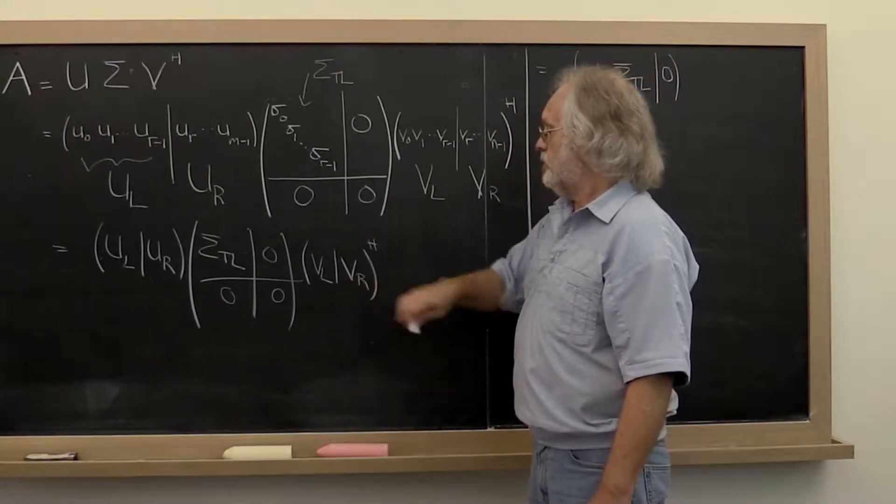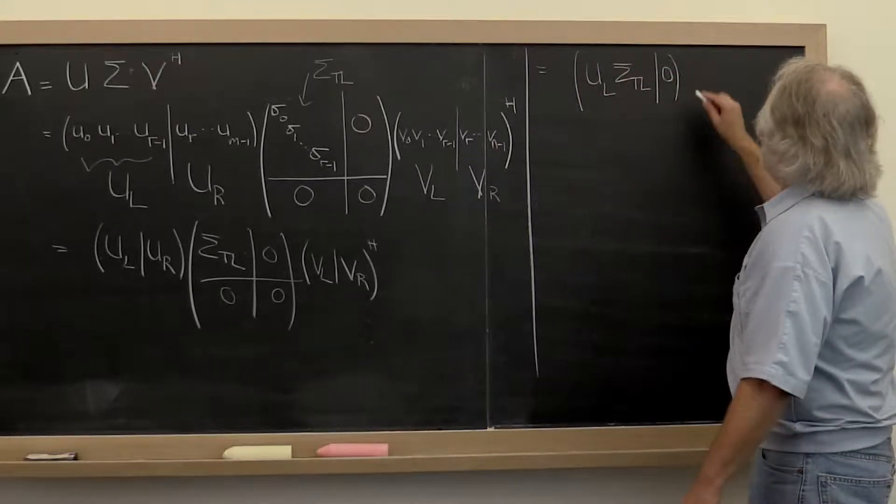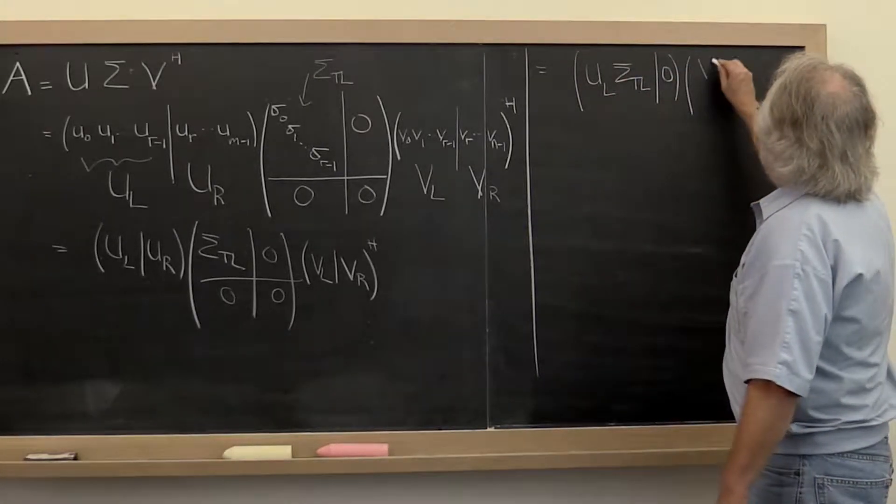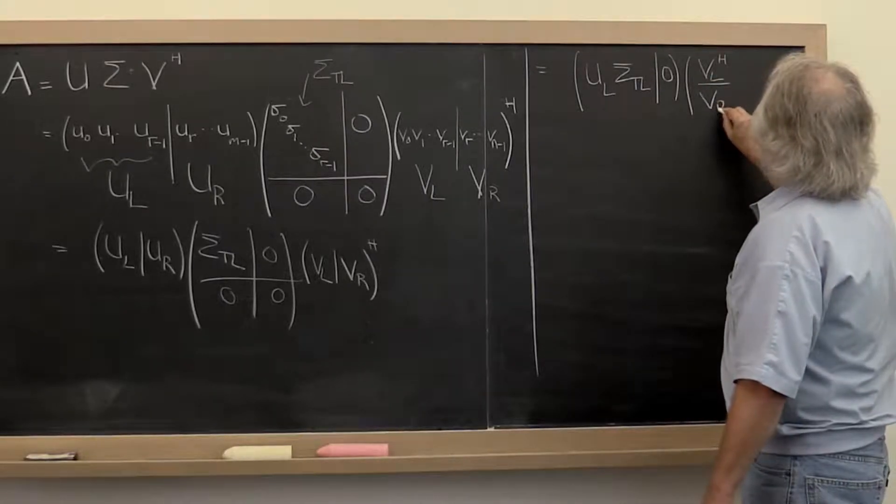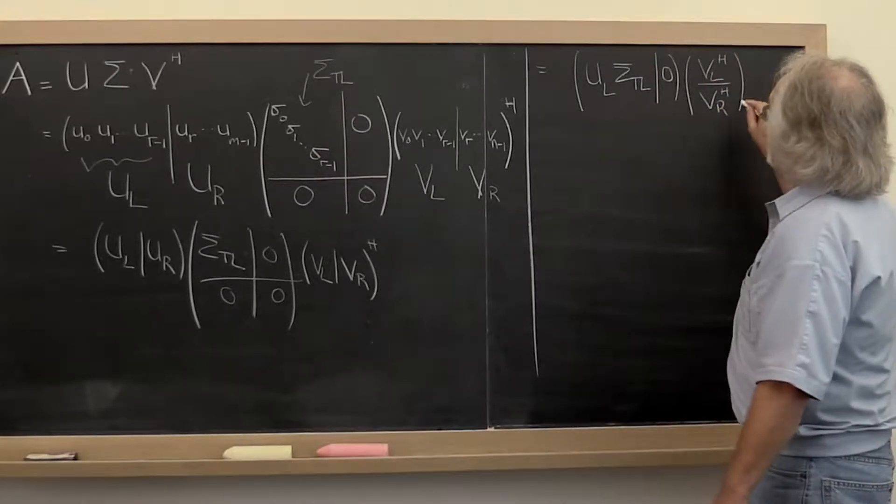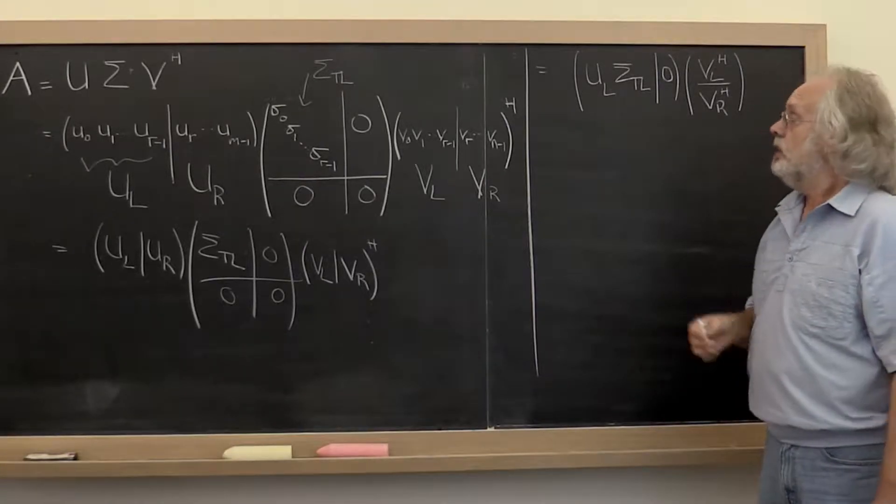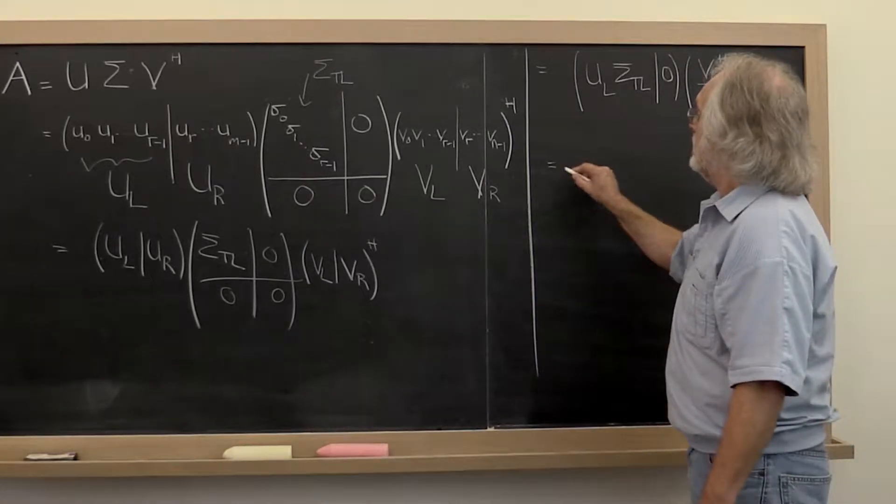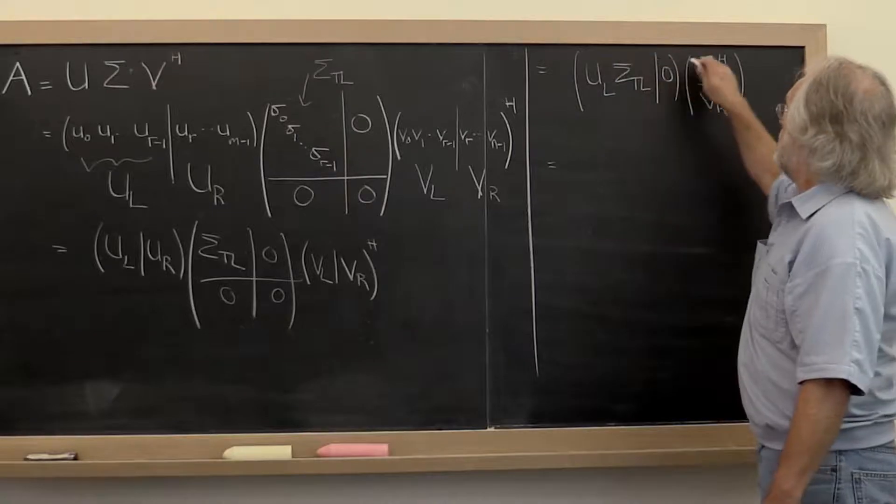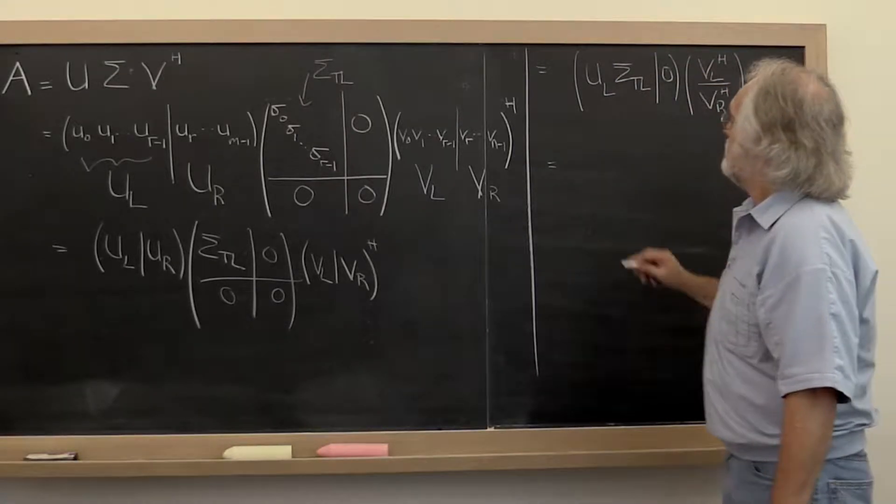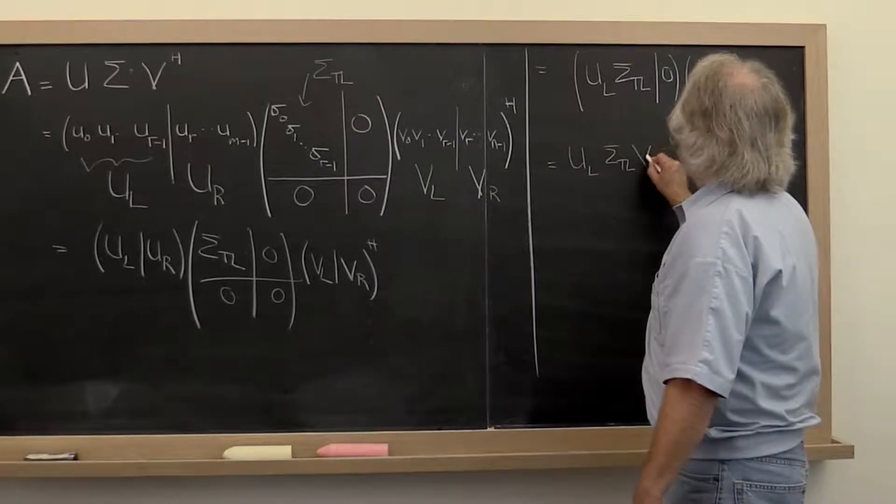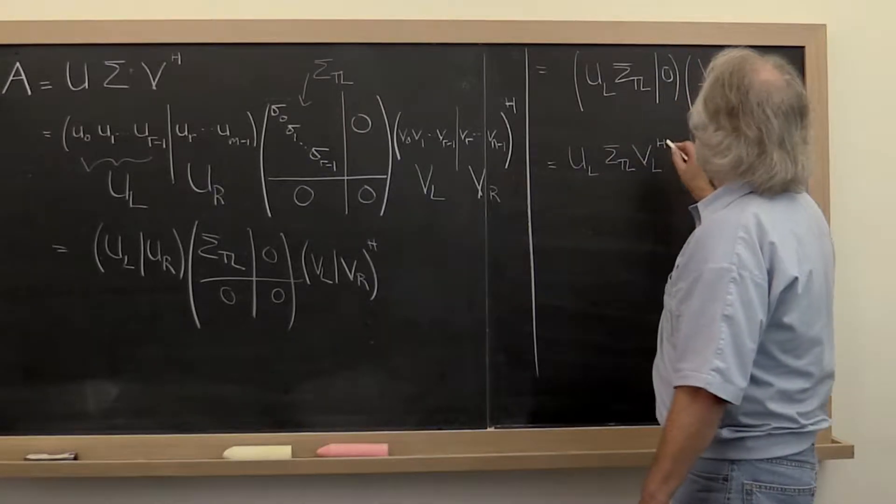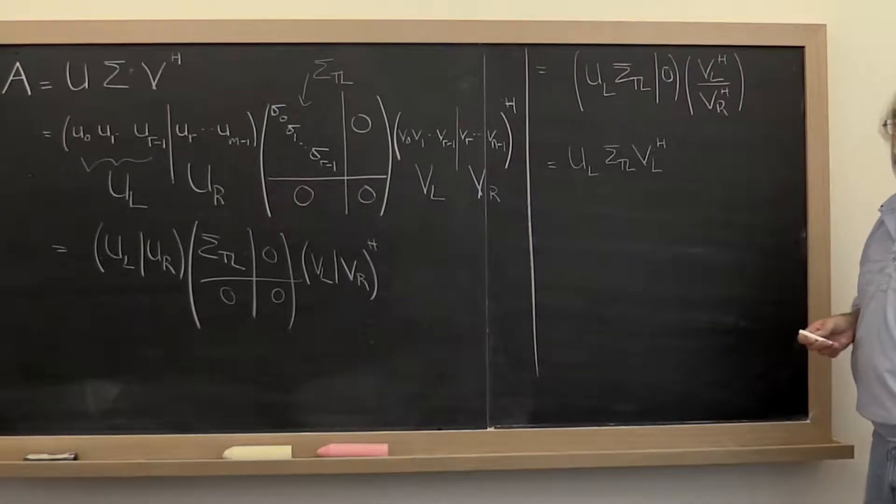And then if we Hermitian transpose this partition matrix right here, we get V left Hermitian transpose V right Hermitian transpose. And if we now multiply this out, we get this times that plus this times that. And therefore we get U left times sigma top left times V left Hermitian transpose.